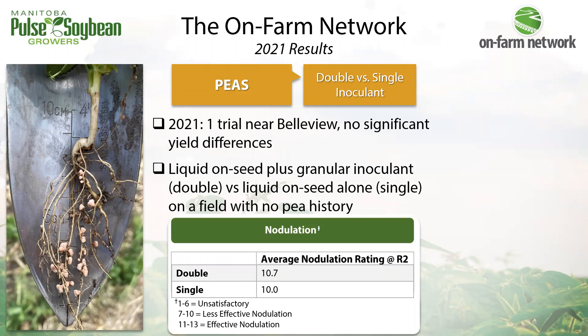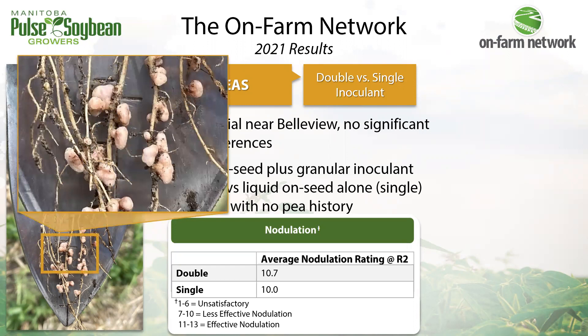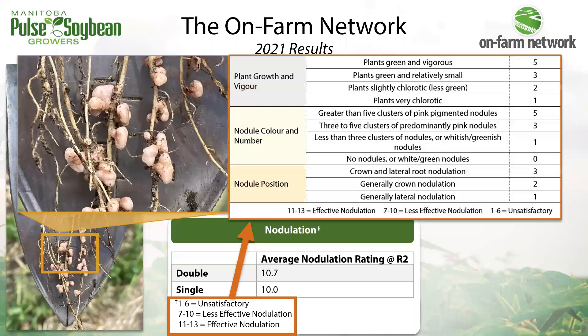Moving into peas and some new trial types — we had one double versus single inoculant trial this year on a field with no pea history. Pea rhizobia is different from soybeans and is native to our soils, so we can investigate inoculant on fields with or without a history of peas. Nodulation was good to excellent for both treatments and as a result we didn't see a yield response. Pea nodules are indeterminate — they branch and form globular structures, so rather than individually counting nodules we use a rating card accounting for above-ground growth, cluster number, and root location.